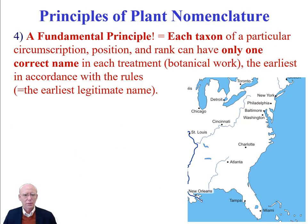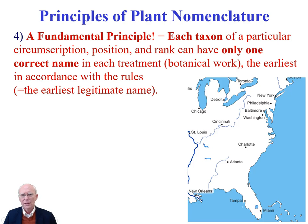The fourth fundamental principle is the most important and hardest to understand. Let me read it: each taxon of a particular circumscription, position, and rank can have only one correct name in each treatment — the earliest in accordance with the rules. Each taxon of a particular circumscription, position, and rank can have only one correct name in each treatment, the earliest one in accordance with the rules.